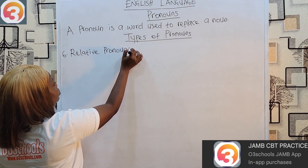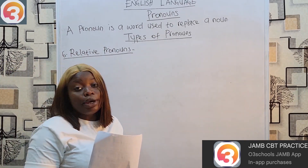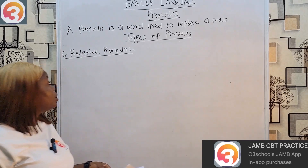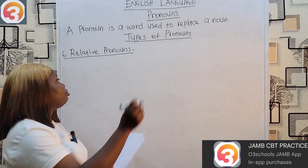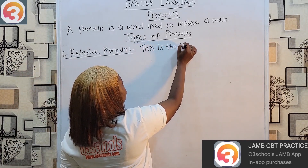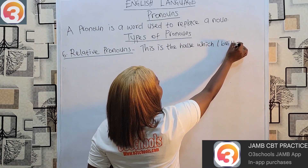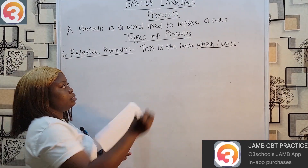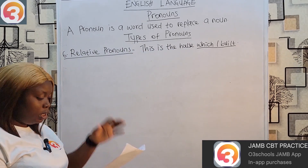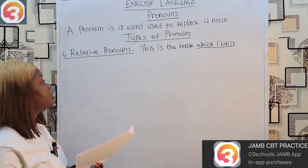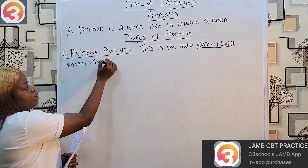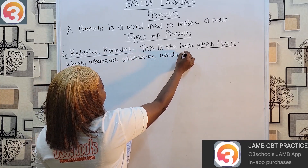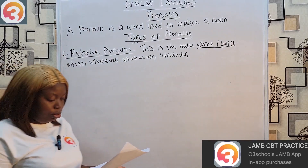We also have relative pronouns. Relative pronouns are used to join sentences, and the pronoun refers to a noun mentioned earlier in the sentence. We use them to introduce relative clauses. For example: 'This is the house which I built' — 'which I built' is a relative clause, and 'which' is a relative pronoun referring to 'this house.' Other examples: what, whatever, whatsoever, whichever, that.